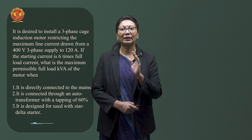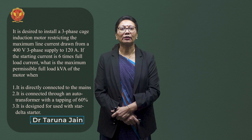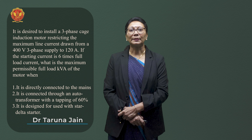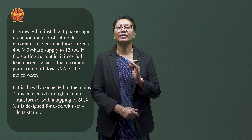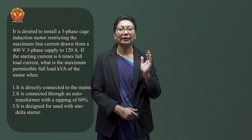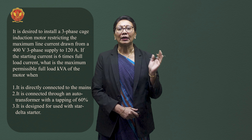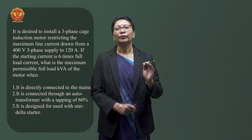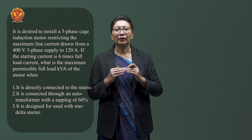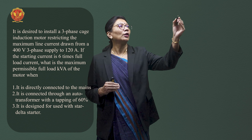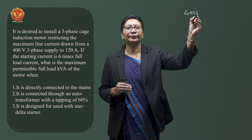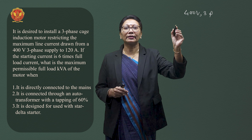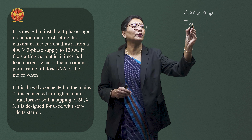Let us solve one numerical based on the method of starting. It is desired to install a 3-phase squirrel cage induction motor. The condition is to restrict the maximum line current drawn from a 400V 3-phase supply to 120A.